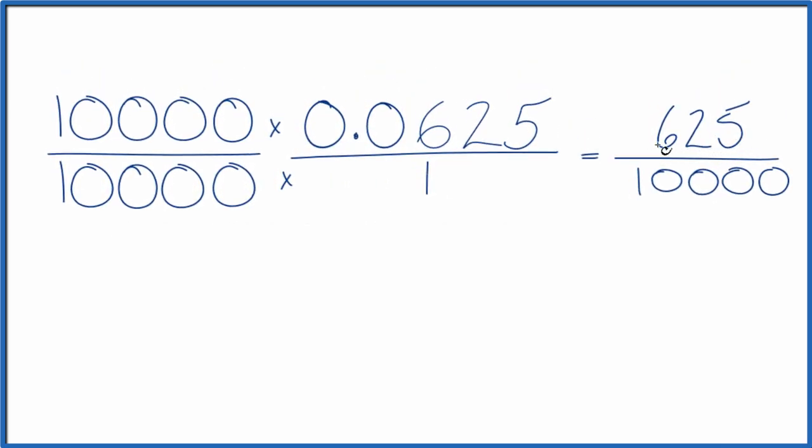I know that 25 will go into 625 and 10,000. So let's try that first. 25 times 25, that gives us the 625. And then 10,000 divided by 25, that's 400.